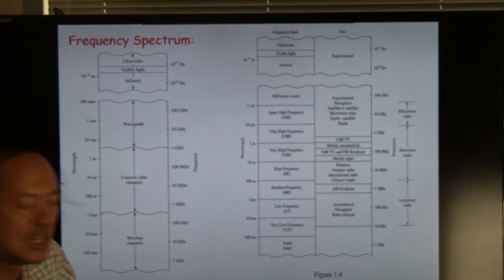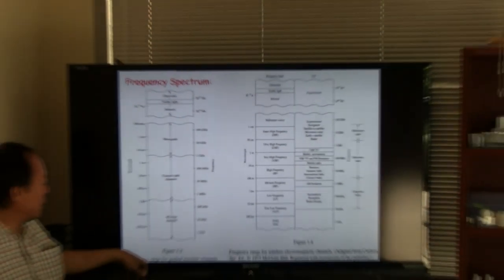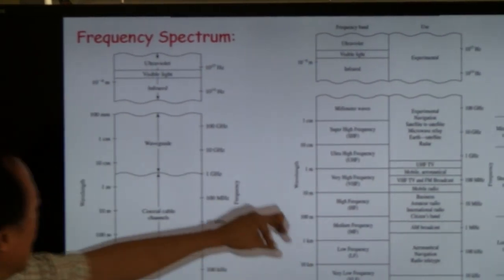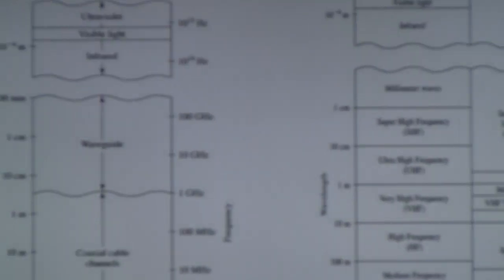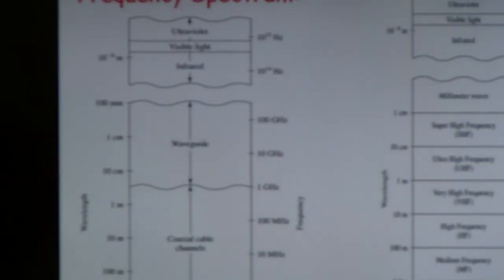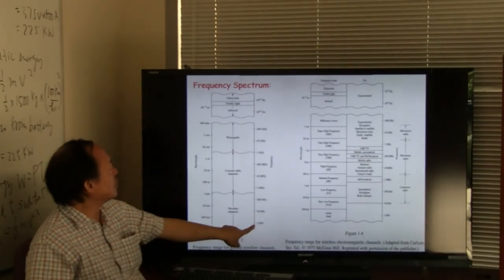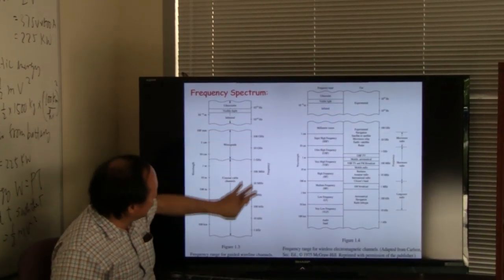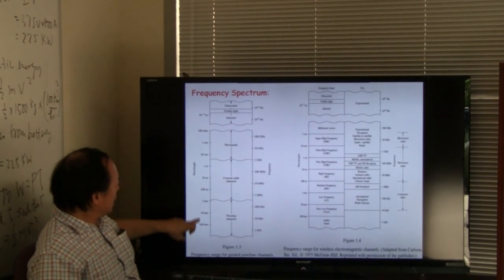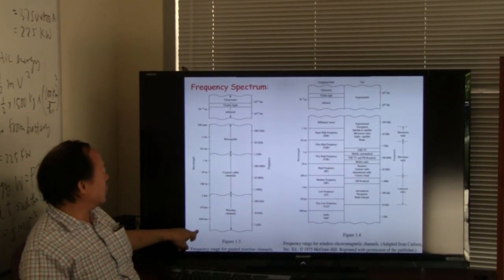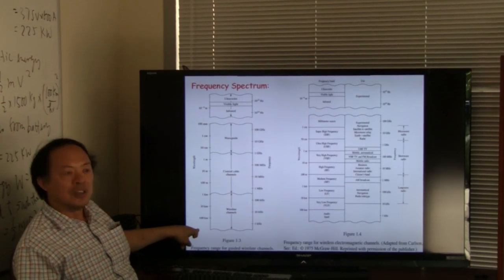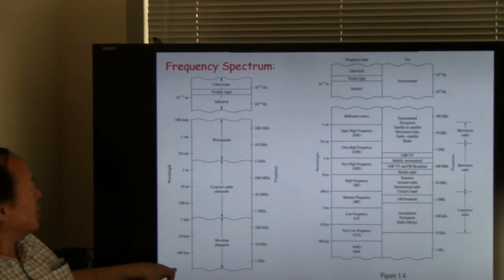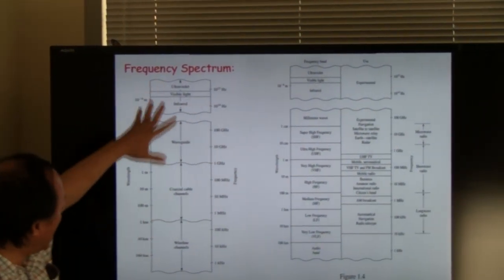So when we come to the frequency spectrum, we can talk about frequency spectrum either for wireline channels or wireless channels. Here I'm just very briefly describing for the wireline channel, from a very low frequency of say one kilohertz all the way to a very high frequency. On this side you can look at the frequency. On this side you can also look at the wavelength, which is wavelength lambda equals the speed of light divided by the frequency.